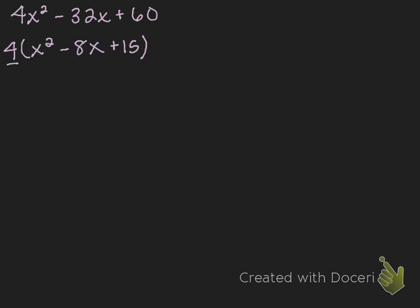From our work with generic rectangles in the past, we've noticed some great patterns. I'll start with my 2 by 2 generic rectangle. I can keep my x squared in one corner and keep my units diagonally from that. It doesn't matter how they're oriented as long as they're diagonally from each other, because what we know about generic rectangles is that the diagonals have the same product. So the two empty boxes are going to have a product of 15x squared, since x squared times 15 gives me 15x squared, but they also need to sum to the negative 8x.